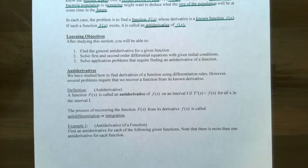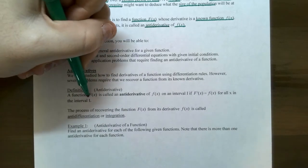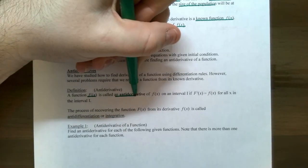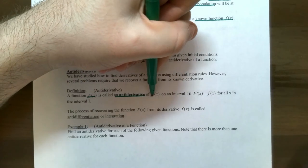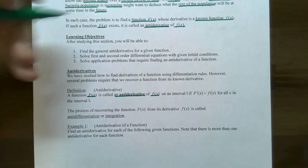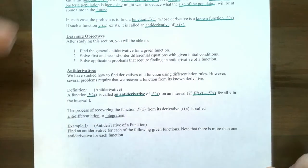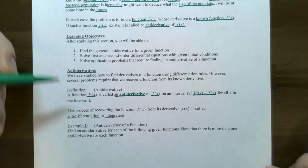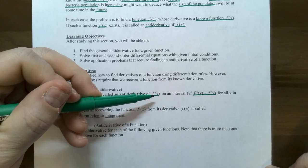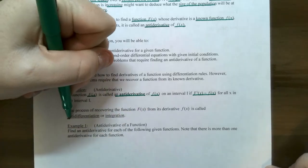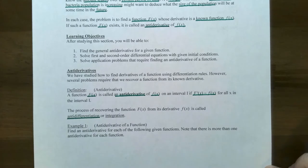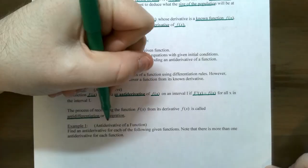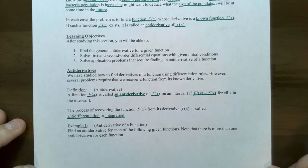Let's look at the definition. The function F(x) is called an antiderivative — not the antiderivative — of f(x) on an interval I, if taking the derivative of F gives the original function f(x) for all x in that interval. The process of recovering F(x) from f(x) is called antidifferentiation. We're reversing the process of finding a derivative, which is related to what's called integration.